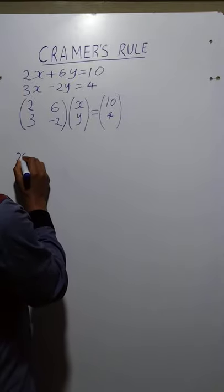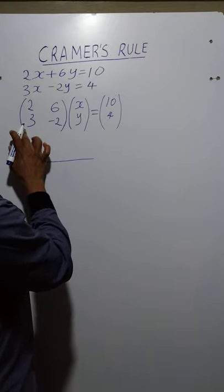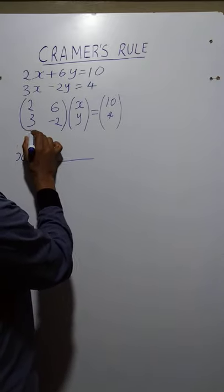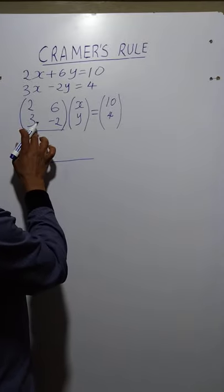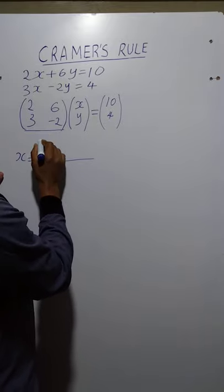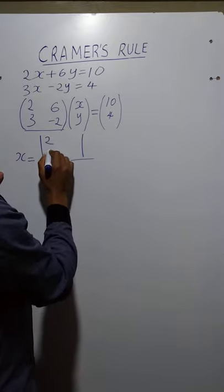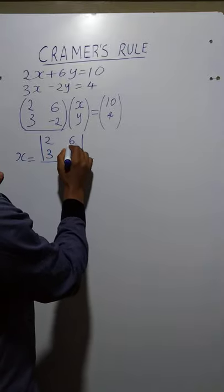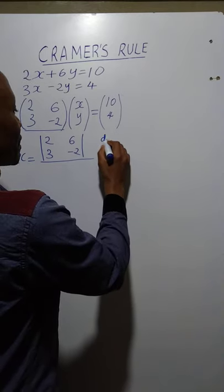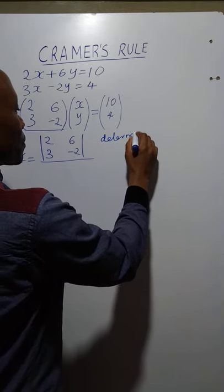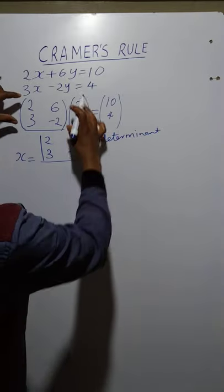Now we shall start solving for x. x will be equal to a fraction where we find the determinant of a matrix. We shall write it mathematically: the matrix 2, 3, 6, negative 2. These bars here mean determinant — we are looking for the determinant of this matrix.